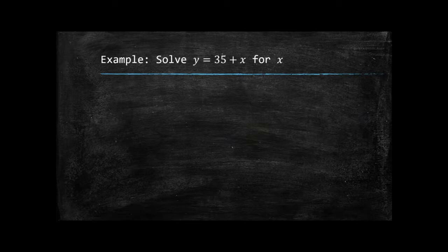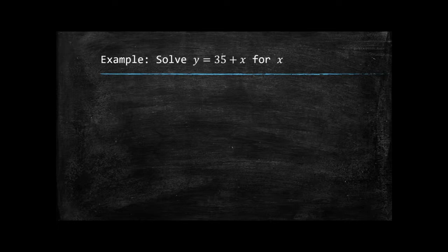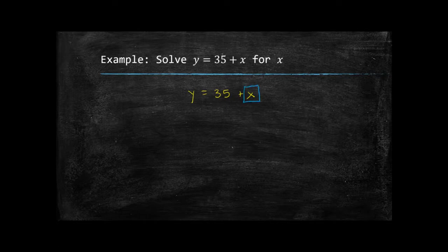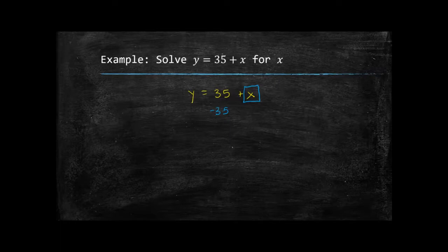The next one: we're solving Y = 35 + X for X. We do have a number in here, but it's still considered a literal equation because we have more than one variable — two variables. This is actually a special type of equation called a linear equation in two variables that we'll look at in week seven, so you're getting a preview here. I want X by itself, so I need to remove the 35. Since we need to get rid of 35, we're going to subtract 35 from both sides. Now 35 and Y are not like terms, so I'm going to put it off to the side.